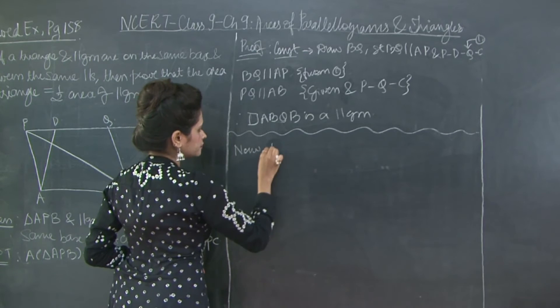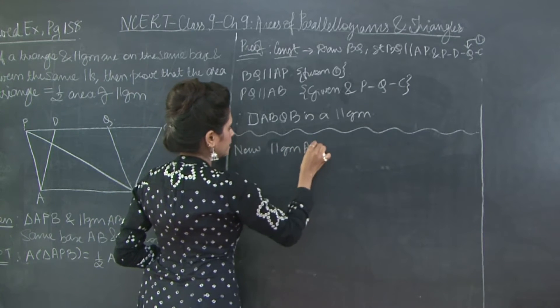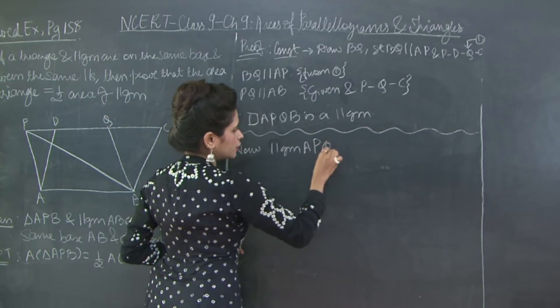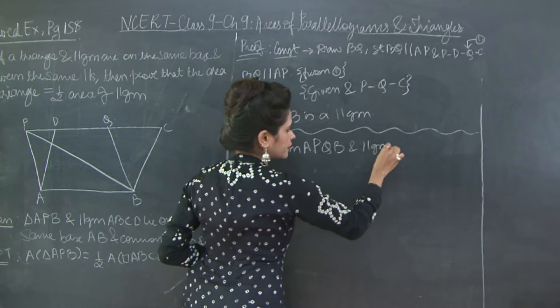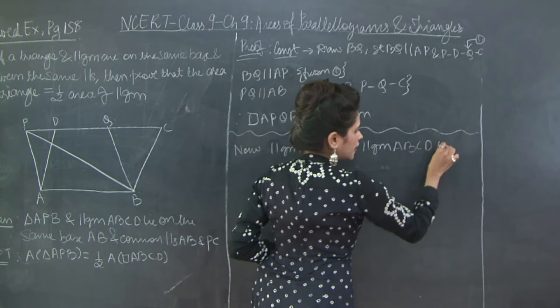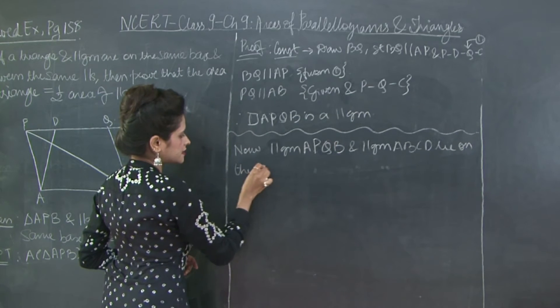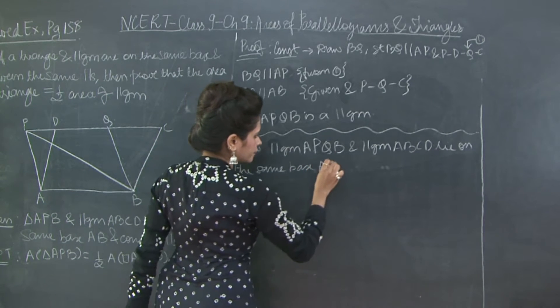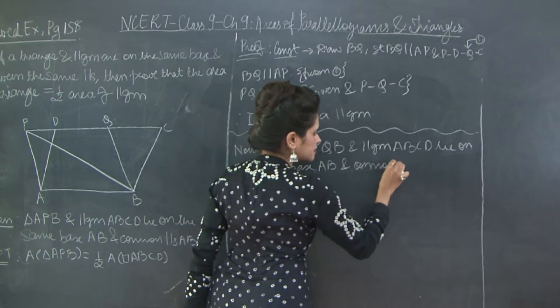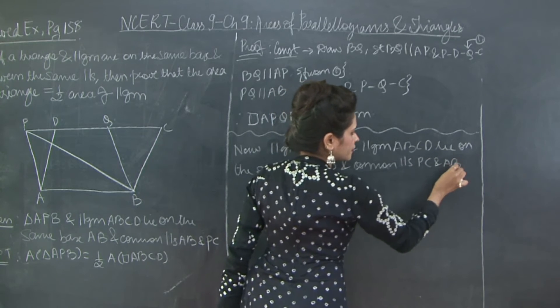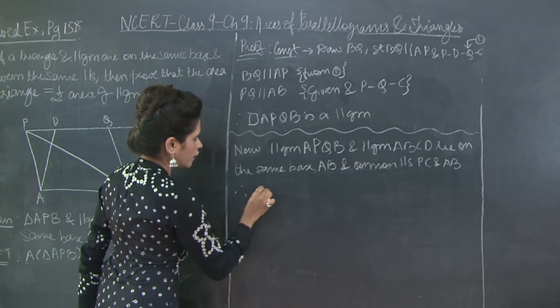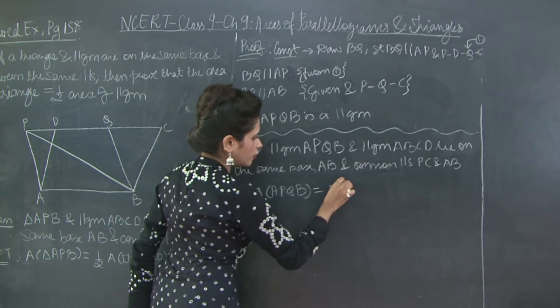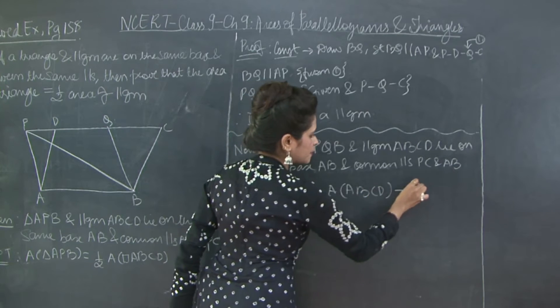So parallelogram APQB and parallelogram ABCD lie on the same base AB and common parallels PC and AB. Therefore, area of APQB is equal to area of ABCD. Let's mark this as equation 1.